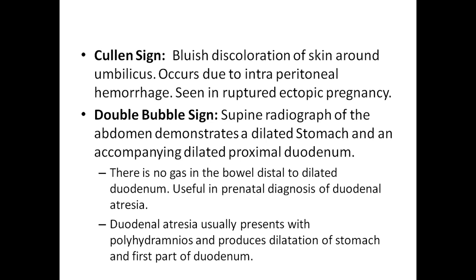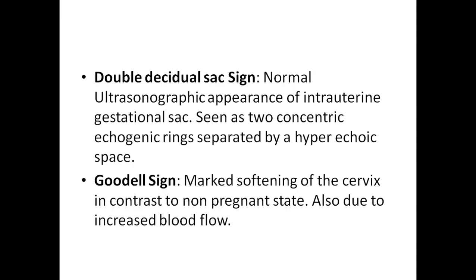Double bubble sign: a supine radiograph of the abdomen demonstrates a dilated stomach and a dilated proximal duodenum. There is no gas in the bowel distal to the dilated duodenum. This is useful in prenatal diagnosis of duodenal atresia, which usually presents with polyhydramnios and produces dilatation of the stomach and first part of the duodenum.